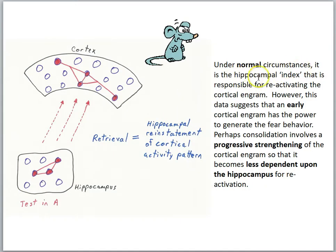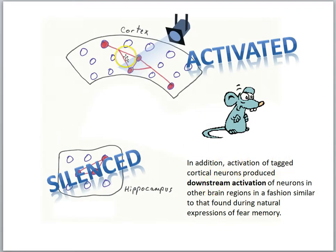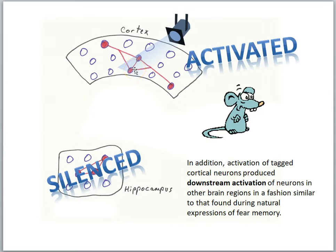Under normal circumstances, it is the hippocampal index that is responsible for reactivating the cortical engram. However, this data suggests that an early cortical engram has the power to generate the fear behavior. Perhaps consolidation involves a progressive strengthening of the cortical engram so that it becomes less dependent on the hippocampus for reactivation. Furthermore, activation of the tagged cortical neurons produced downstream activation of neurons in other brain regions in a fashion similar to that found during natural expressions of fear memory — even though this was artificial optogenetic stimulation.